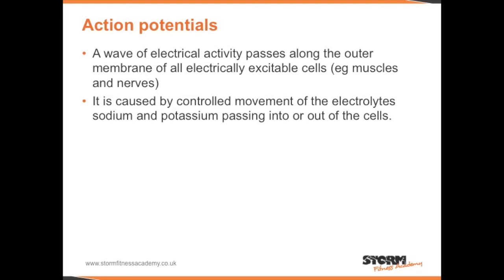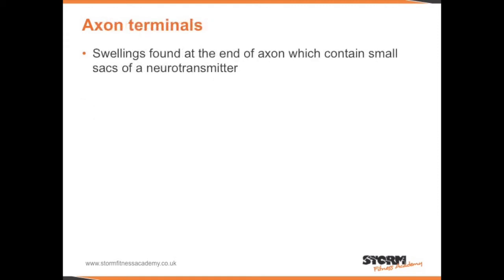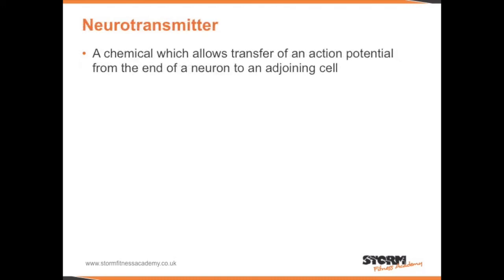In order for a muscle to contract, it needs an action potential. This is a wave of electrical activity that passes along the outer membrane of all electrically excitable cells. It is caused by controlled movement of the electrolytes sodium and potassium passing into or out of the cells. As the electrical activity passes to the end of the nerve cell, it reaches the axon terminals — the swellings found at the end of an axon which contain small sacs of a neurotransmitter. Neurotransmitters are chemicals which allow transfer of an action potential from the end of a neuron to an adjoining cell.